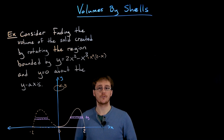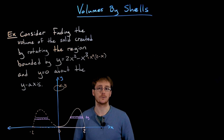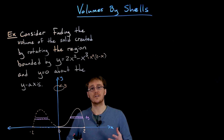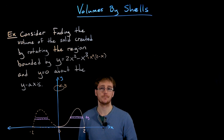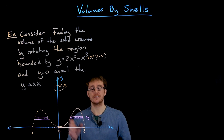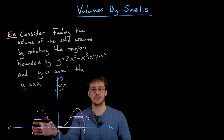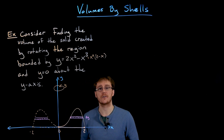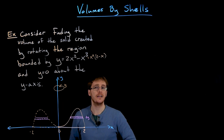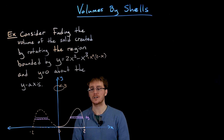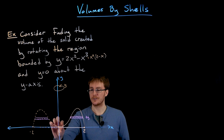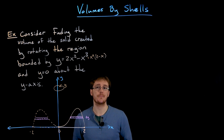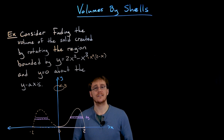The disk or washer method is too difficult for this problem, so instead we develop a new approach: volume by shells or cylindrical shells. An important observation is that we can think of creating the washer alternatively — rather than taking a horizontal slice of the solid, we could approximate the area of our region using vertical strips or vertical rectangles, similar to how we chose between integrating with respect to x or y for areas.